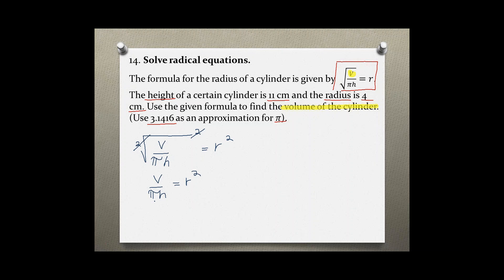Now solving for v I have to get pi and h to the other side. Because this is division, I'm going to do the opposite which is multiplication by pi h and that should take care of the problem.